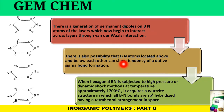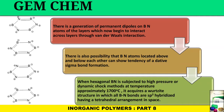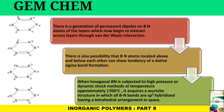However, this sigma bond possibility is not realized because the separation between the two layers is too large for sigma bond formation, making any such bond very weak. To bring the layers closer together and facilitate bond formation, hexagonal BN is subjected to high pressure or dynamic shock methods at approximately 1700°C, causing it to acquire a wurtzite structure in which all boron–nitrogen bonds become sp3 hybridized — a change from sp2 to sp3 hybridization with tetrahedral arrangement.